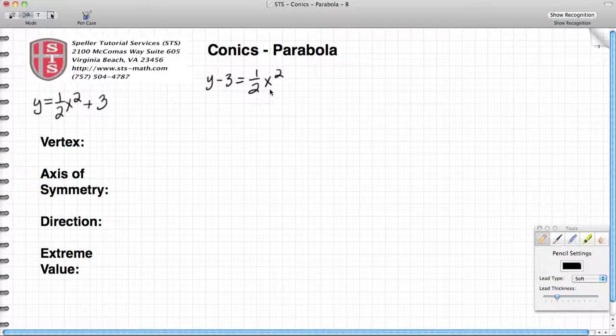In this case here, with the x as the only term that's being squared, it's understood that the x value of the vertex is 0, and then the y value of the vertex is the opposite of what we see, so that would be a positive 3.